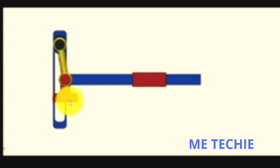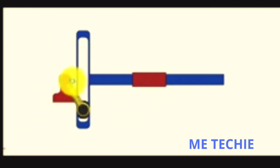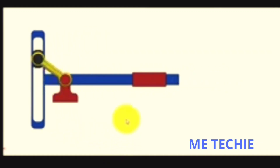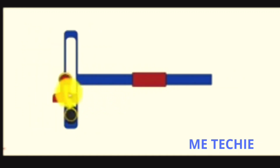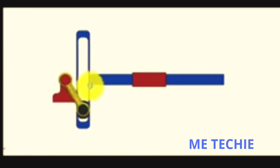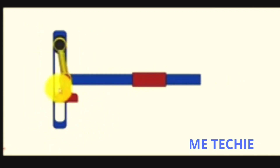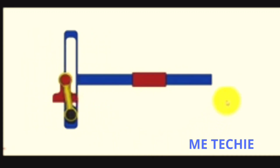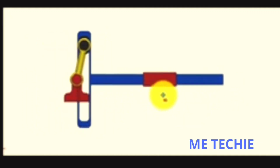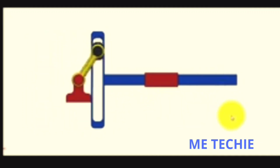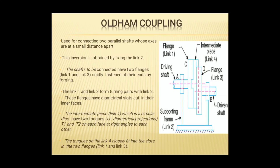In the Scotch Yoke mechanism diagram, the red colored link is the fixed link, the yellow colored link is the crank, and the blue colored link is the floating link. As the crank rotates, the floating link performs reciprocating — to and fro — motion.